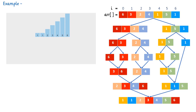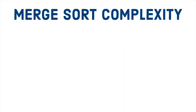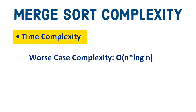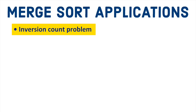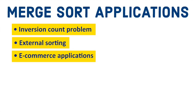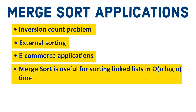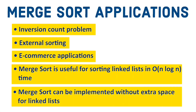I hope now you have a good idea of how merge sort algorithm works. Let's talk about its complexity. Merge sort will take O(n log n) time to sort the array, and we have seen that it takes space to merge two sorted partitions into one, which can go up to the original array size in the worst case. That's why it has O(n) space complexity as well. Here are a few merge sort applications: inversion counting problem, external sorting, e-commerce applications, and merge sort is also useful for sorting linked lists in O(n log n) time. Merge sort can also be implemented without extra space for linked lists — I will leave that as an exercise for you.